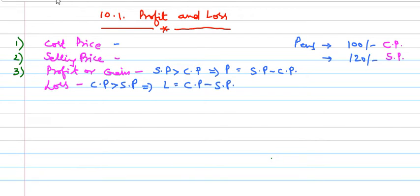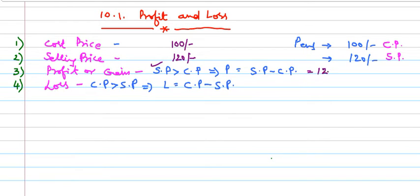These are the basic terminologies in profit and loss. For example, if I bought something for 100 rupees — that is the cost price — and sold it for 120 rupees — that is the selling price — since selling price is more than cost price, I got a profit of 120 minus 100, which is 20 rupees of profit.